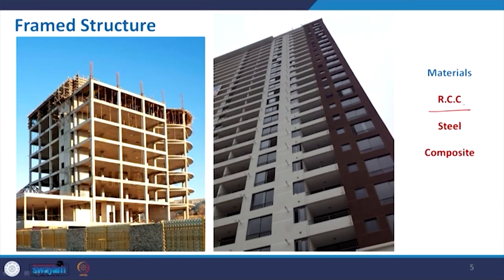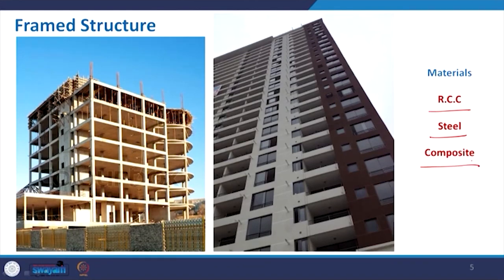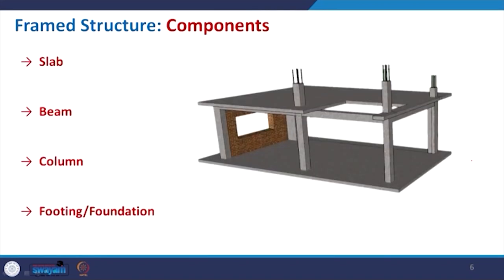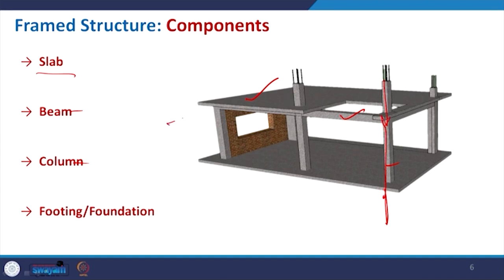As far as materials are concerned, we can use RCC — reinforced cement concrete — to make the frame structure, or we can use a steel frame. Nowadays it is also very common to have frame structures with steel and glass or other lightweight materials for partitions and openings, and sometimes composite or advanced materials. The superstructure is a combination of slab, beam and column, with the footing and foundation at the lower underground level.